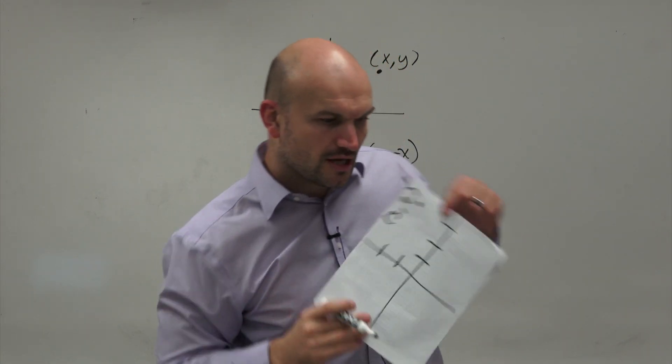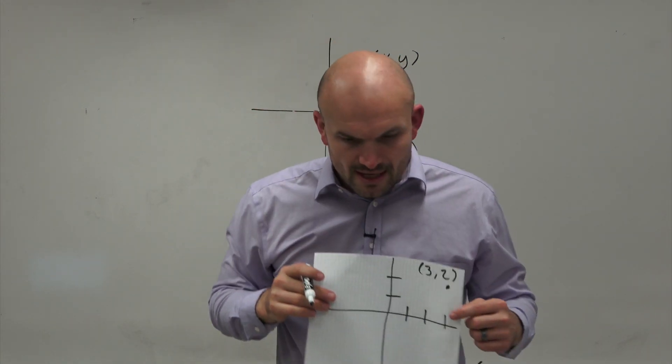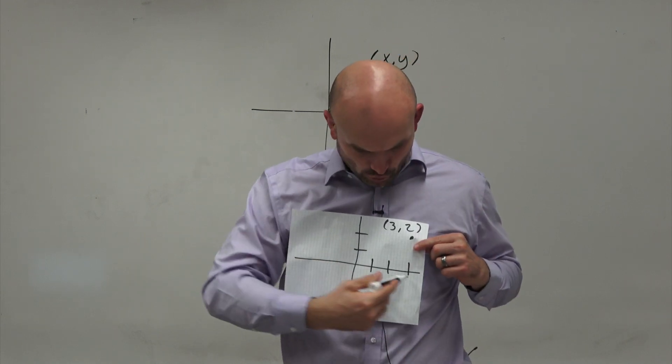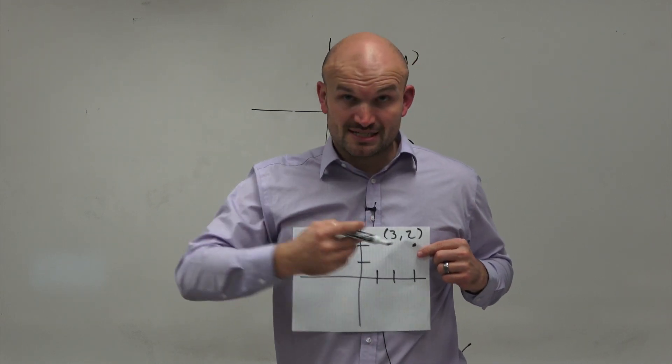Now, let's look at a rotation of counterclockwise, OK? And if we're going to go counterclockwise in this case, again, the same thing's happening. Horizontal distance of 3, vertical distance of 2.